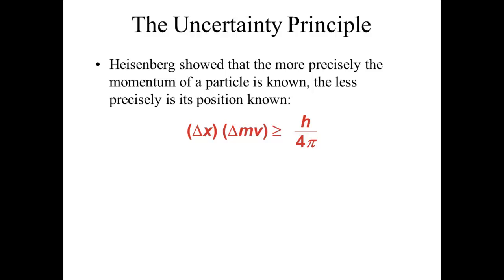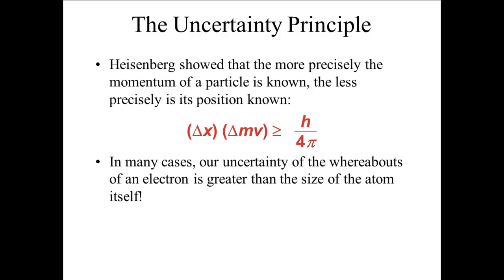Again, since Planck's constant is so small, this can be ignored for larger objects. However, for electrons and atoms, the uncertainty in the position of the electron in the atom is often larger than the atom itself.